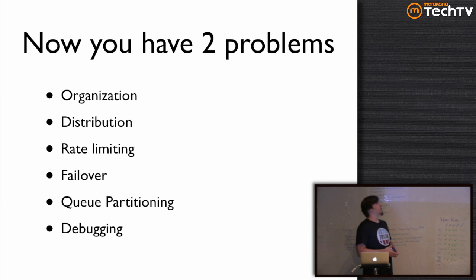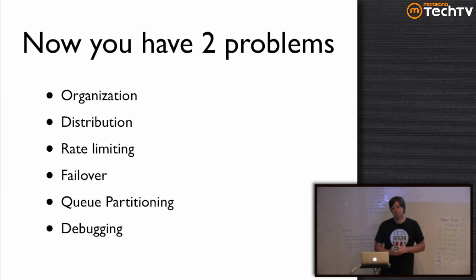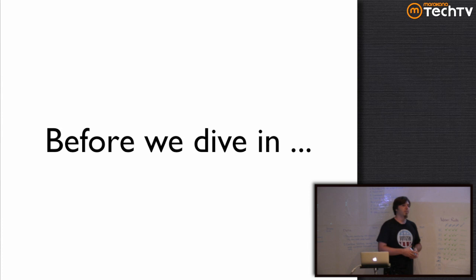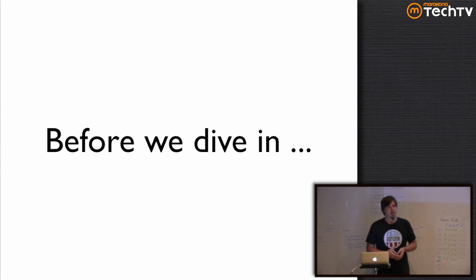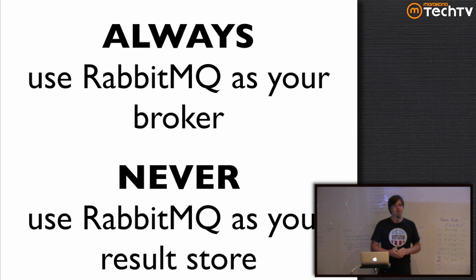But now you have two problems — actually much more than two. These are all design problems that come with dealing with distributed systems, and Celery is no stranger to these kinds of problems. Before we dive into each of these design issues, I have pretty strong opinions about what you should and should not be doing with Celery and how you should do it. One thing I'll say up front: always use RabbitMQ as your broker. Never use RabbitMQ as your results store. You will be so much happier if you just follow these rules.